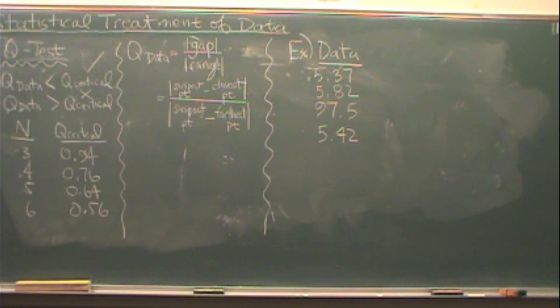So what's Q critical and what's Q data? Q critical is a tabulated value. You see this table here. If you don't have it, you might want to write it down. This is N, the number of trials, and Q critical: 0.94, 0.76, 0.64, 0.56.